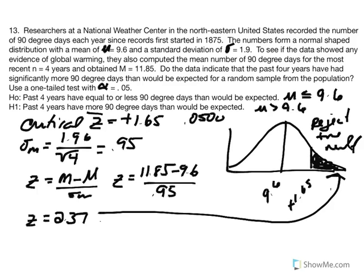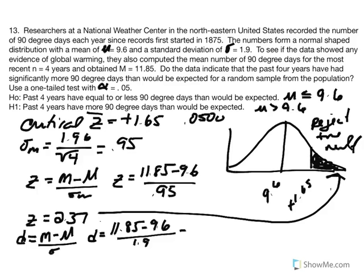Now we compute Cohen's d and write our concluding statement. Cohen's d will support the conclusion that we reject the null and provide evidence that the last 4 years demonstrate a significant increase in 90-degree days per year. Cohen's d equals 11.85 minus 9.6 divided by 1.9, giving us 1.18. Referring to our table, anything above 0.8 is considered high — so this is a high effect size.